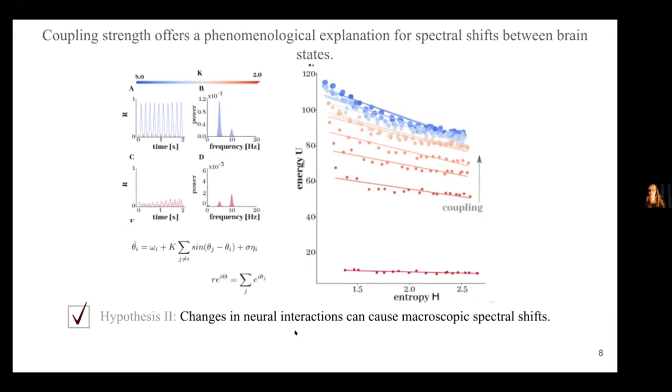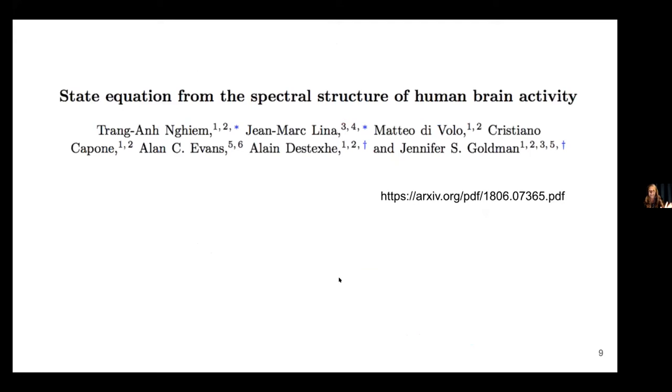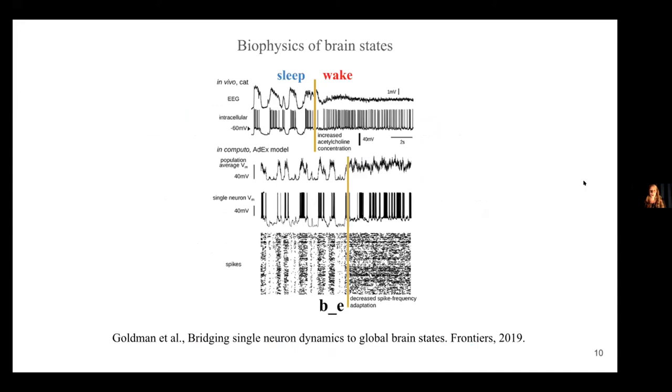So changes in neural interactions could cause macroscopic spectral shifts, but what would it mean for the brain to be more or less coupled? What would be the biological mechanisms underlying changes in such coupling? So you can see more about this story in this preprint that we've published with Chongan and Alain and Cristiano as well. So one of the changes, as we've discussed today, between more or less active states is the level of neuromodulation in the brain. So if you have higher levels of neuromodulation, you do things like close potassium leak channels and thereby depolarize neurons, and shut off spike frequency adaptation. So when you have the leak channels open with low modulation, you have up and down states that disappear when you close these leak channels, depolarizing the cells leading to a fluctuation driven regime.